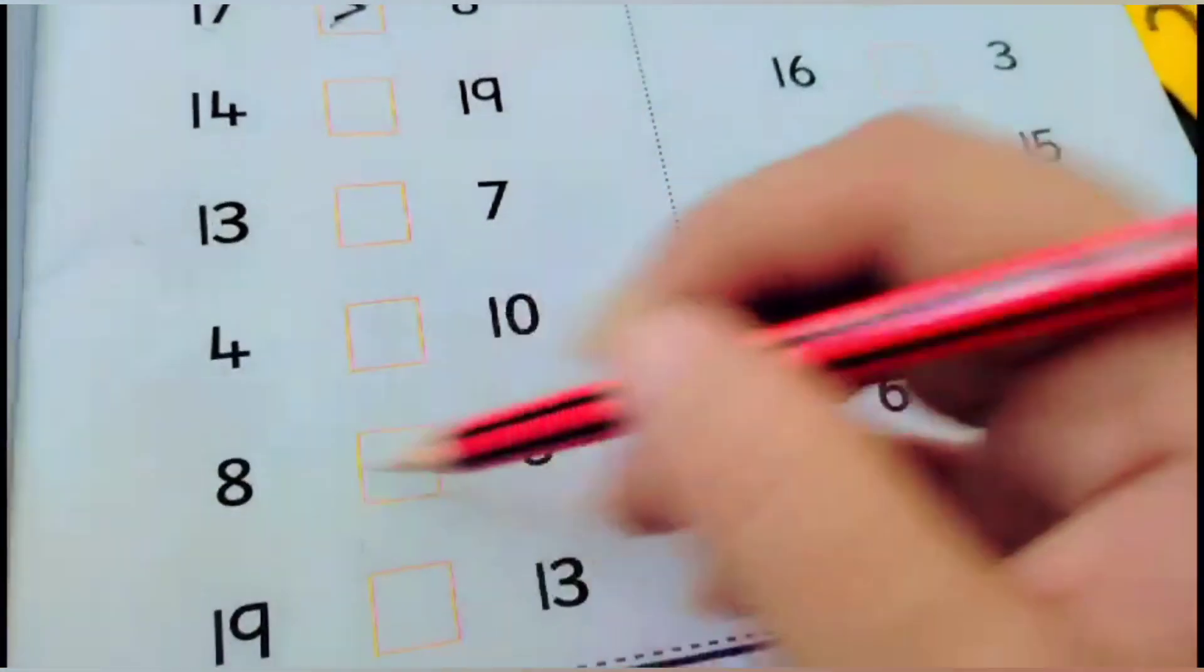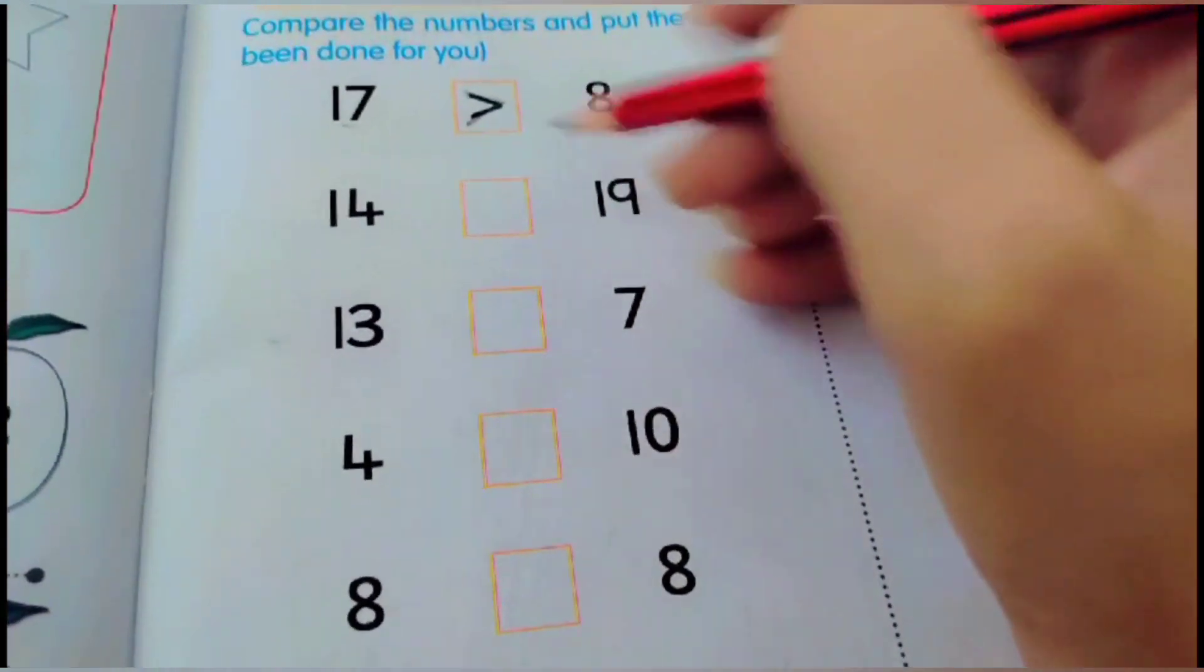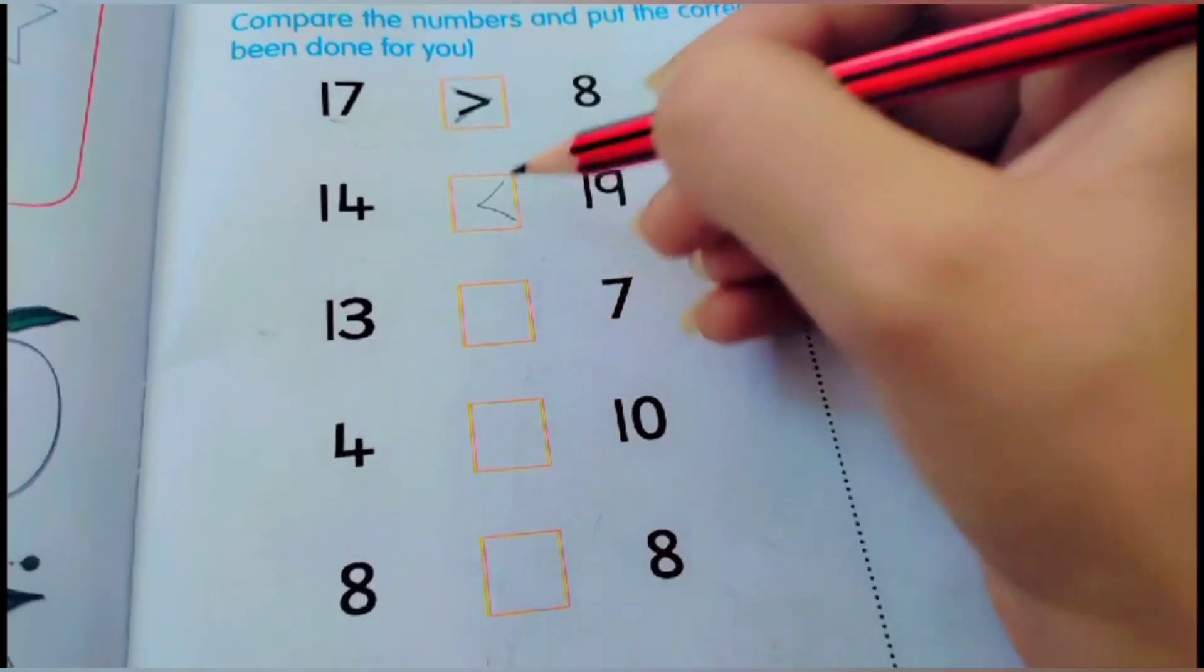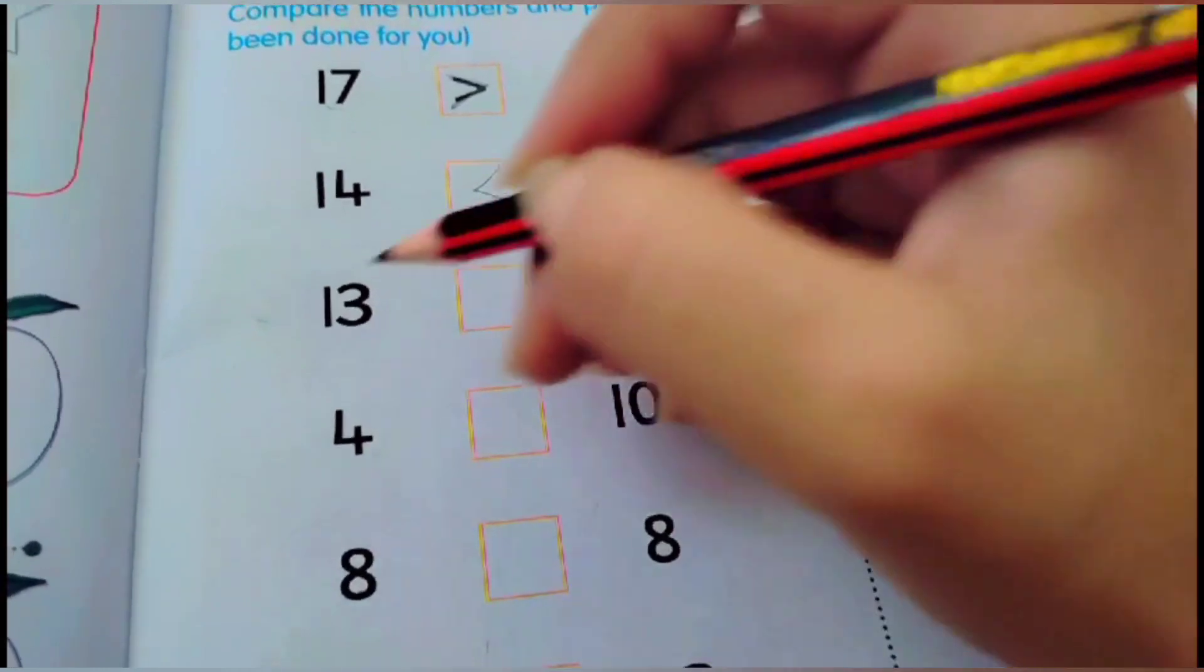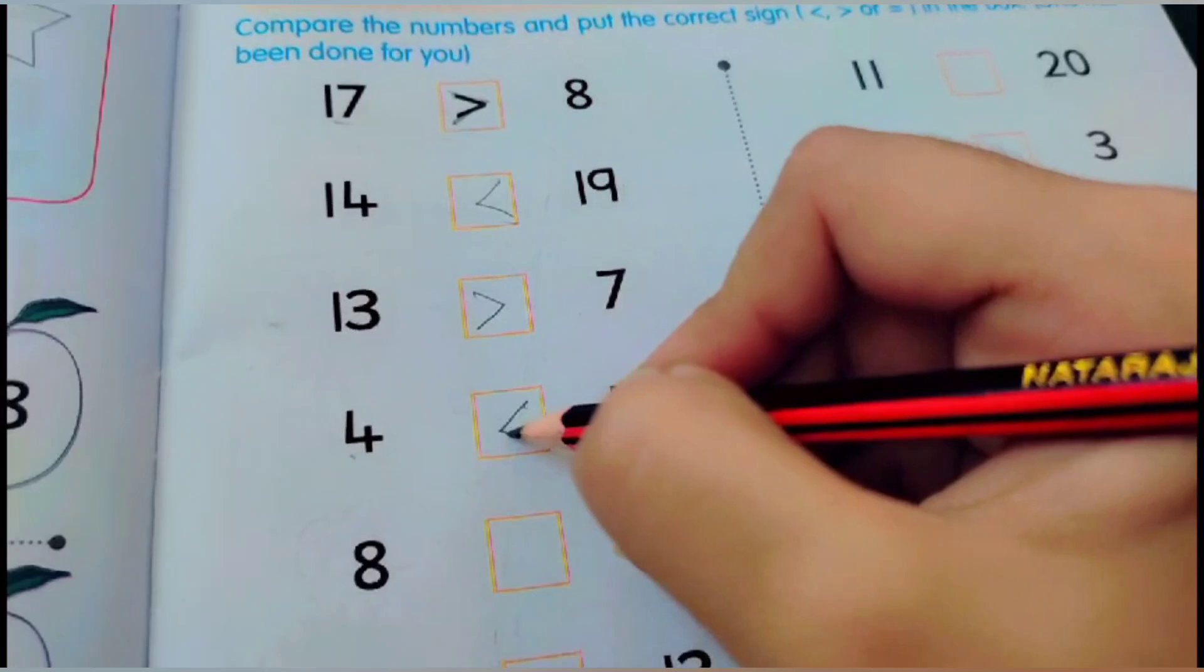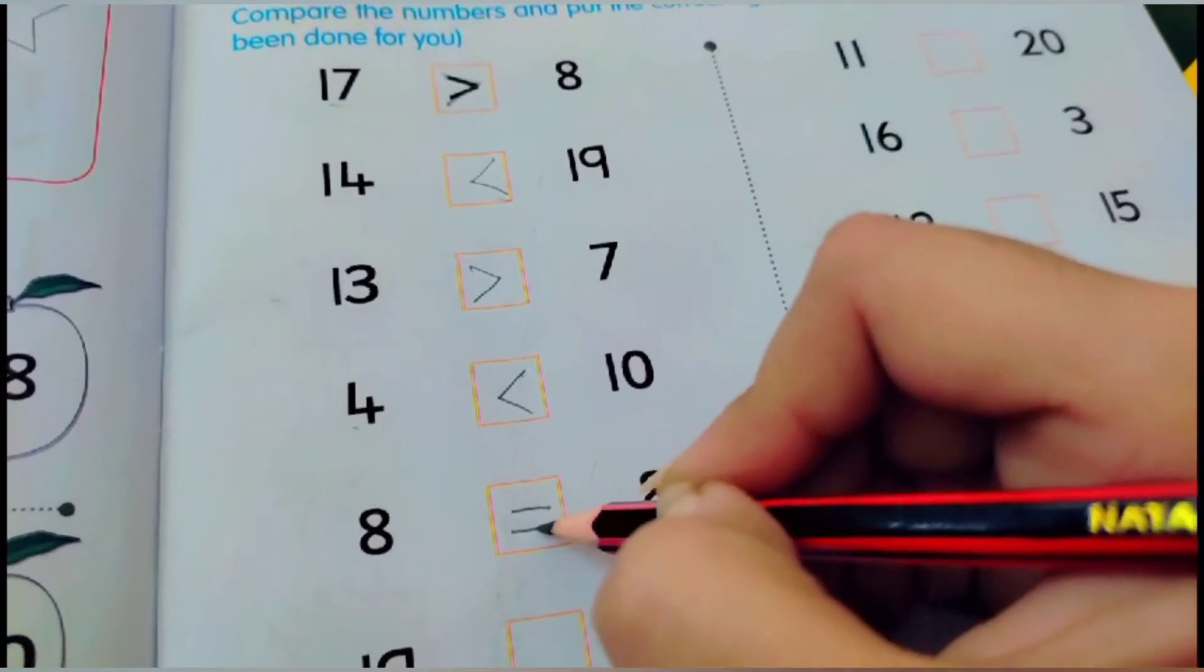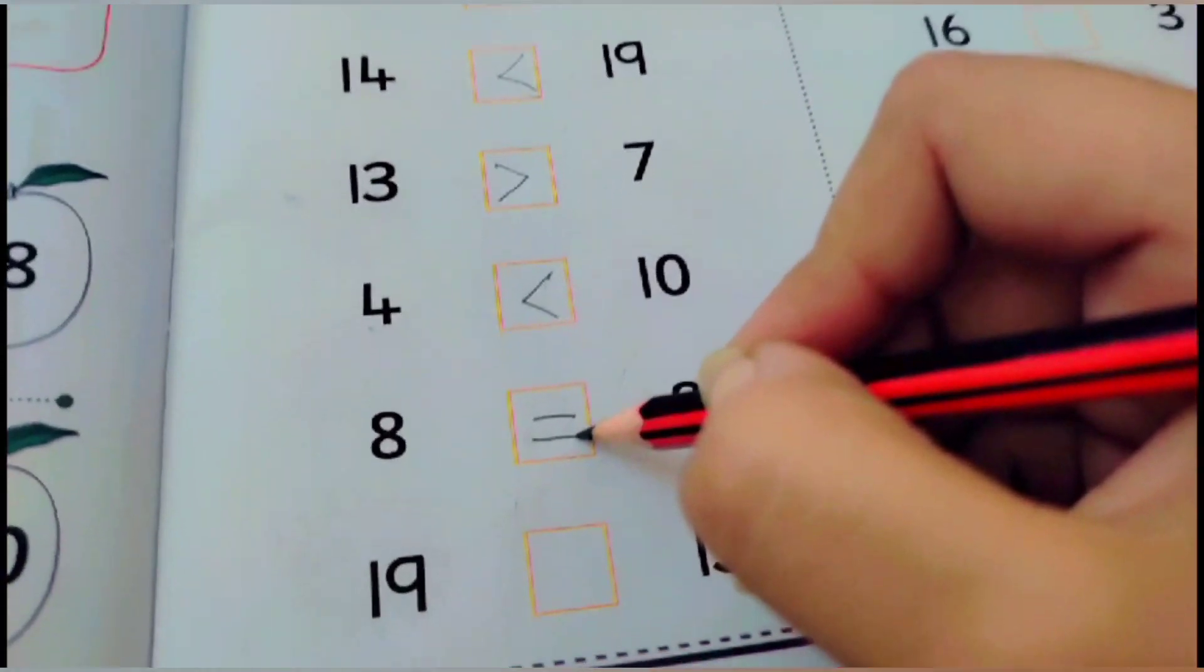And if both the numbers are same, we have to put sign of equals to. Let's do 14, 19. 19 is bigger. We will open the mouth on the bigger side. 13, 7. On the 13 side. 4, 10. 10 is bigger. 8, 8. Both are equal. So, we will make two horizontal lines. Sign of equals to.